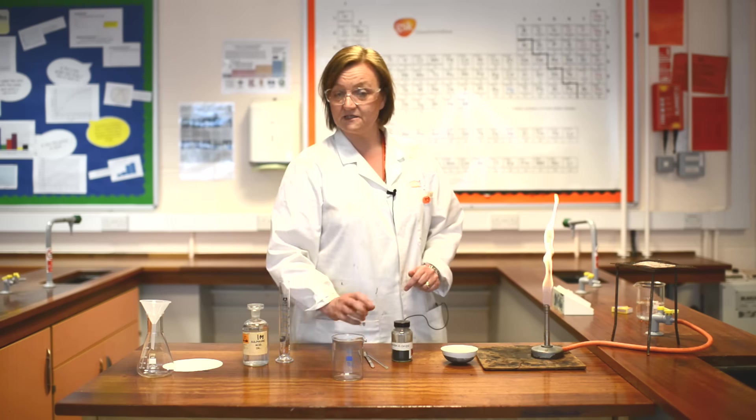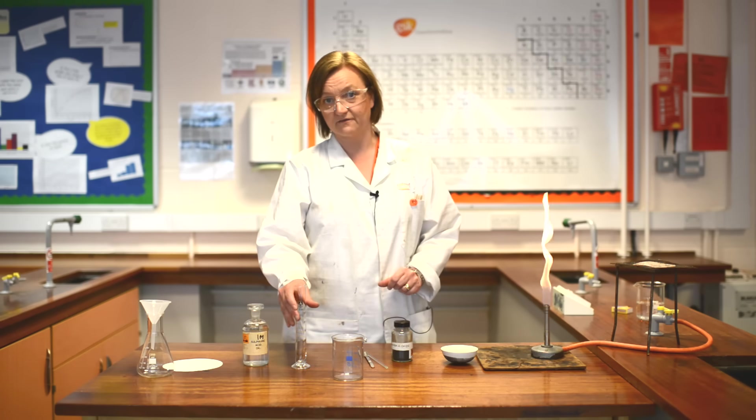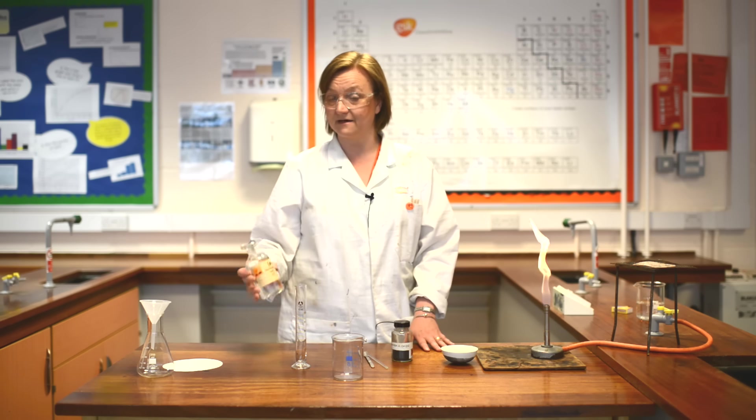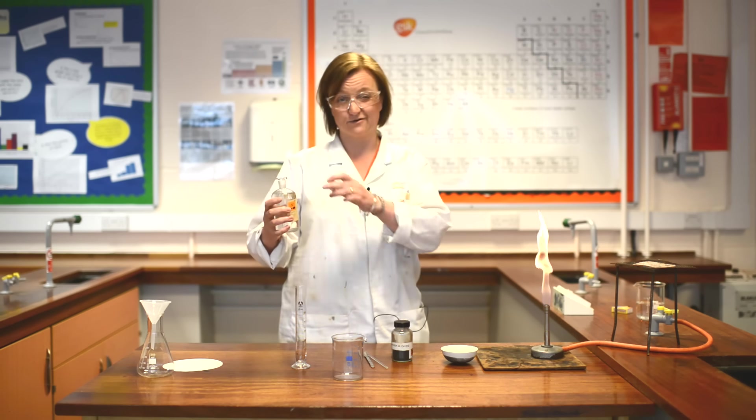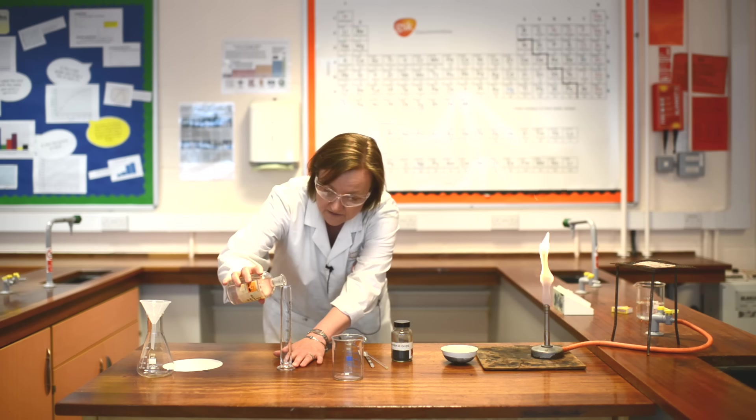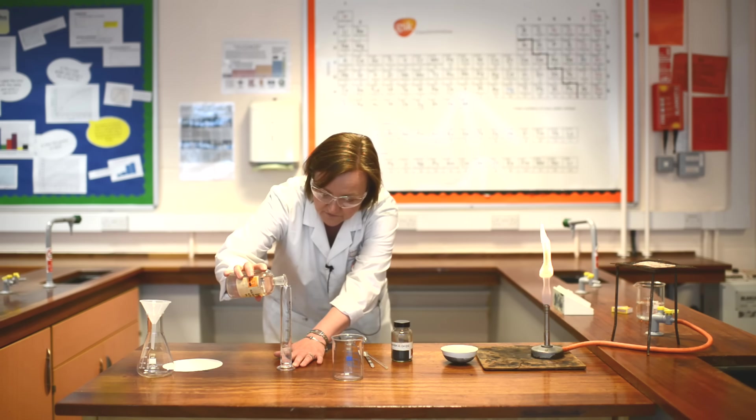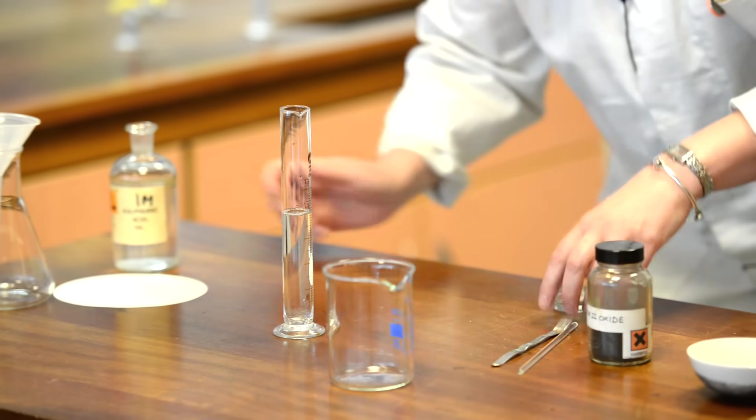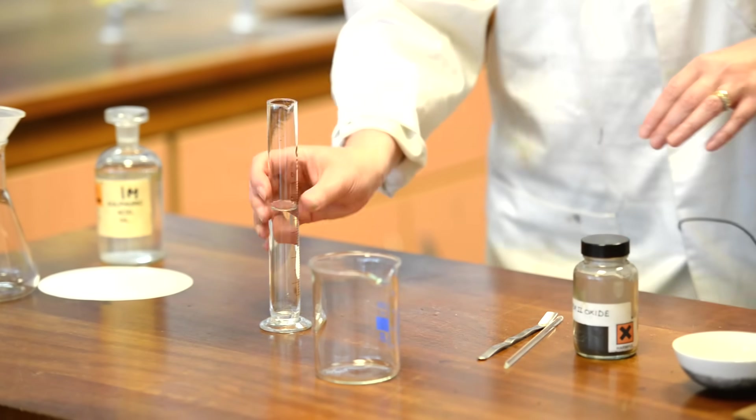The first thing we need to do is take a measured amount of our sulphuric acid, and you'll notice I'm wearing goggles because I don't want to get the acid in my eye. This is quite strong, so I have to be quite careful. Using a measuring cylinder, I'm carefully going to measure out 40 centimeters cubed of my sulphuric acid, and I'm going to pour that into a beaker.